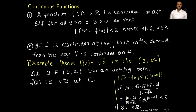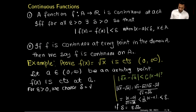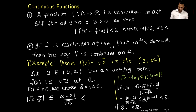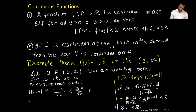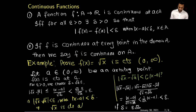Now I will write this as a more formal proof. For all ε > 0, we choose δ = √a · ε. Then |√x − √a| = |x − a| / (√x + √a) ≤ |x − a| / √a. Since |x − a| < δ = √a · ε, we get |x − a| / √a < ε. In other words, |√x − √a| < ε whenever |x − a| < δ. This implies √x is continuous at x = a.